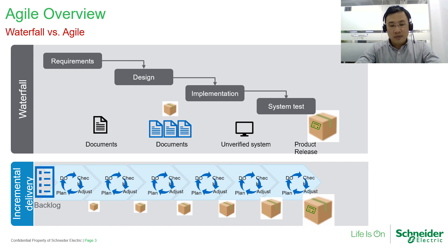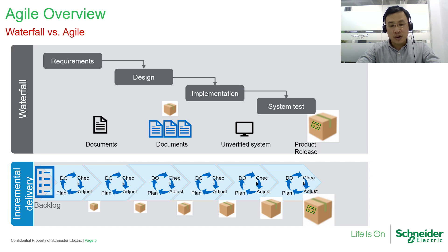In the Agile model, the whole program is divided into several program increments. Each PI session has several iterations. The duration of each iteration is fixed, such as one month, and the scope to be developed is defined.